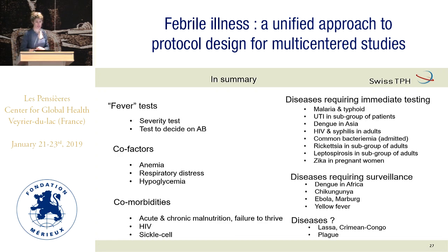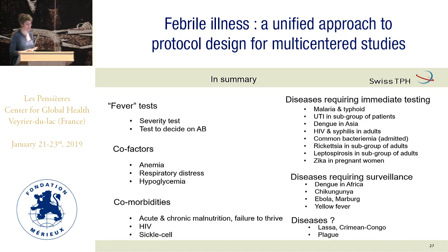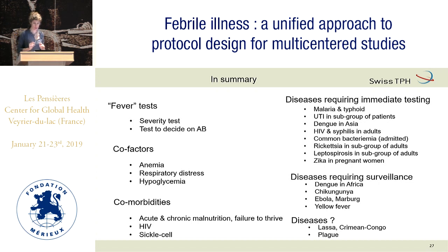On the pathogen side, diseases requiring immediate testing — if we have enough money, mostly at hospital level — include malaria and typhoid obviously, UTI only in subgroups, dengue in Asia in all patients, HIV and syphilis in adults, common bacteremia only when admitted, rickettsia and leptospira only in targeted adults, and Zika in pregnant women. Diseases better suited to surveillance rather than immediate patient-level management include dengue in Africa, chikungunya everywhere, Ebola, Marburg, yellow fever, and epidemic diseases. And some diseases — Lassa, Crimean-Congo, plague — we really don't know what to do at all.